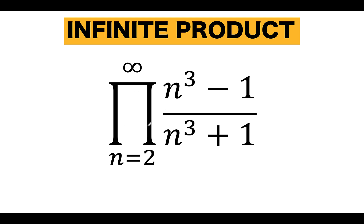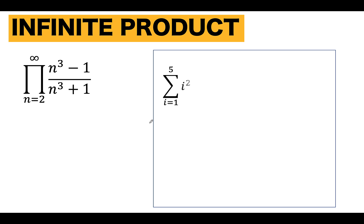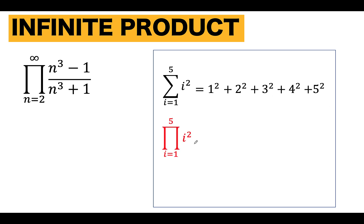What is the meaning of this capital pi symbol? This capital pi symbol is our product operator, similar to the sigma notation for addition. To understand this, compare it with sigma of i squared, i from 1 to 5: we add 1 squared plus 2 squared plus 3 squared plus 4 squared up to 5 squared. With capital pi of i squared, i from 1 to 5, we multiply 1 squared times 2 squared times 3 squared times 4 squared up to 5 squared. So capital pi notation is for the product of a sequence of numbers.